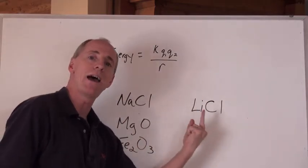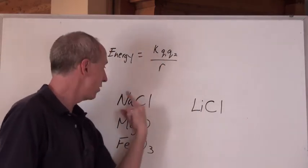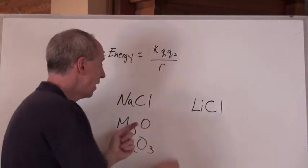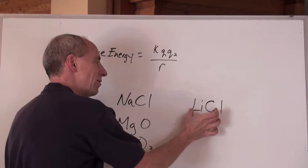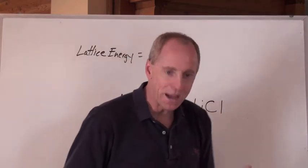Lithium chloride is going to have a greater lattice energy than sodium chloride, because they might be positive 1, negative 1 both, but the radius here is smaller. And that's how you do that.